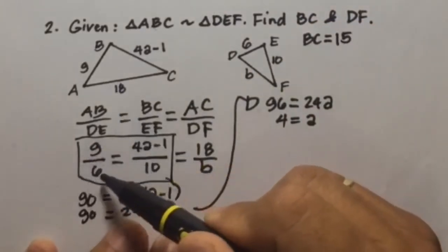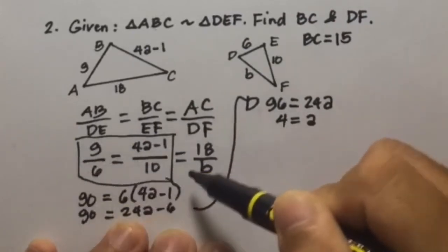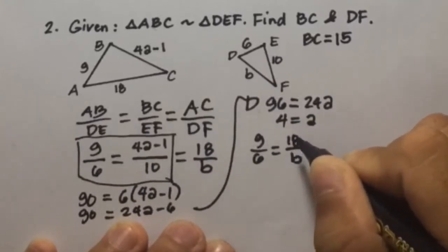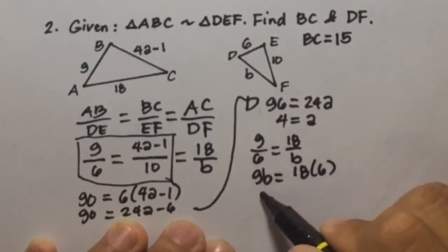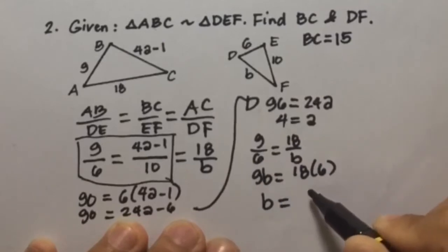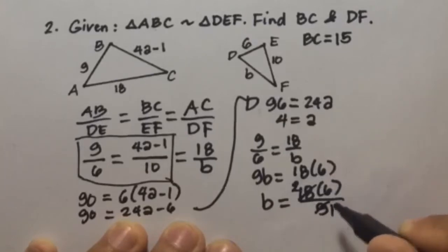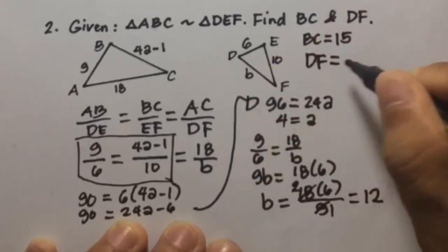Now since 9 over 6 equals 18 over B, we can just solve using this. So 9 over 6 equals 18 over B. Cross-multiply, this will be 9B equals 18 times 6. Divide both sides by 9, B equals 18 times 6 over 9. Then cancel, this will be 2, this will be 1. So 2 times 6 equals 12. So B equals 12, meaning DF equals 12.